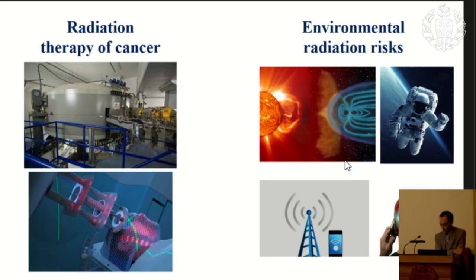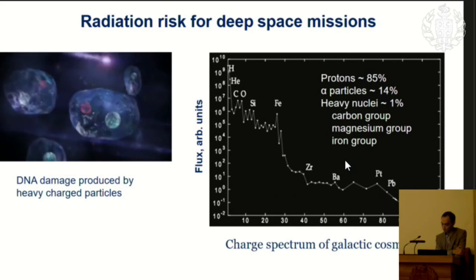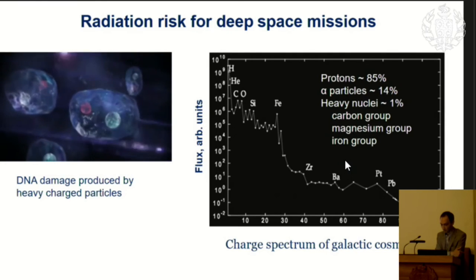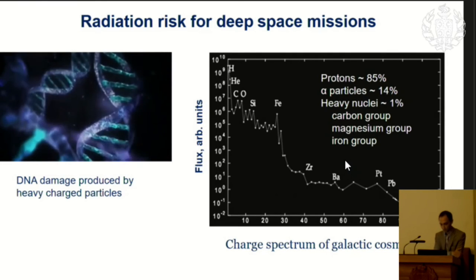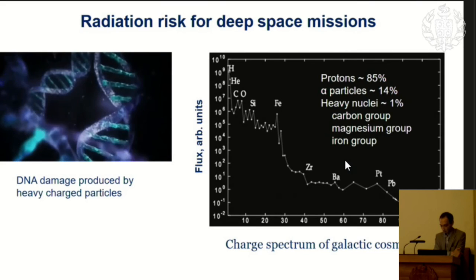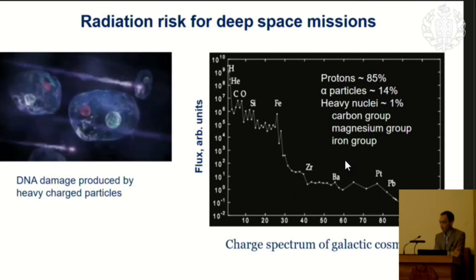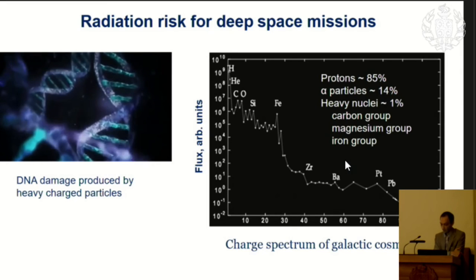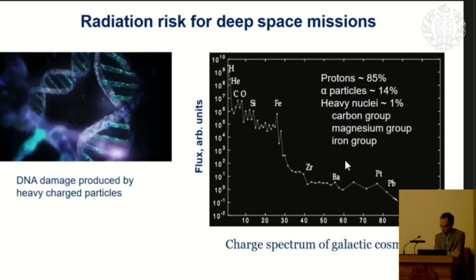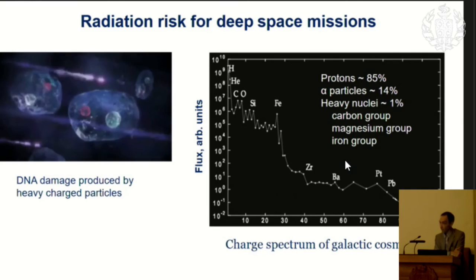Radiation research on damage from cosmic rays allows us to speak about specific risks from space radiation. Mostly when we come outside of the Earth's magnetosphere, we encounter a lot of very high charge and energy particles, and almost no physical protection could be developed to protect the crew of any spacecraft.